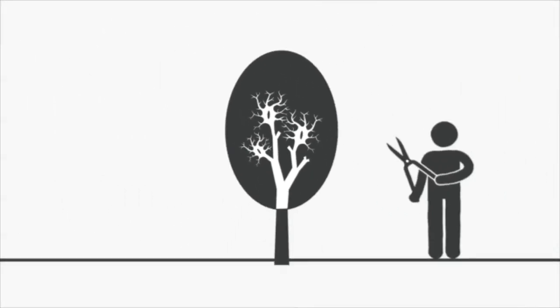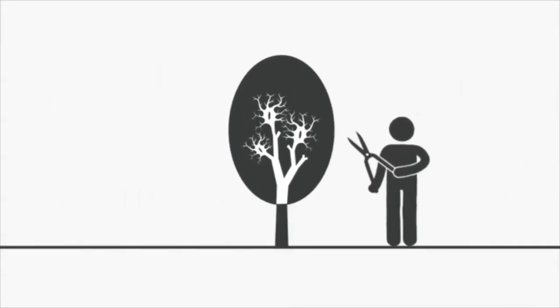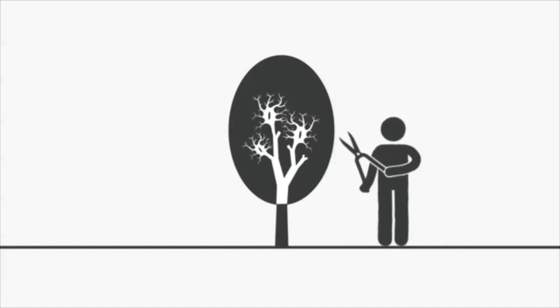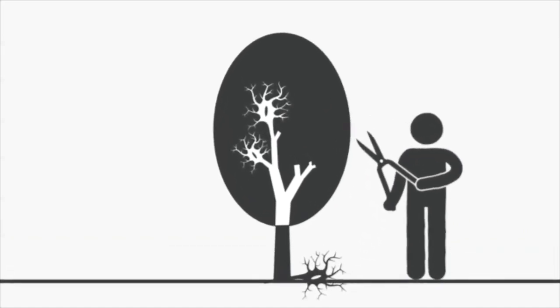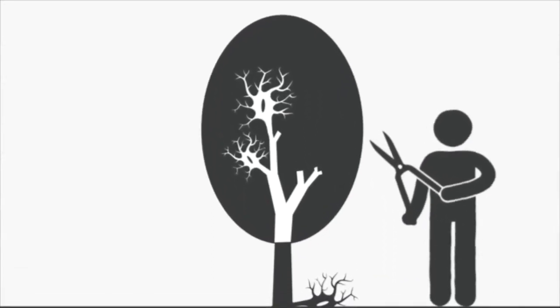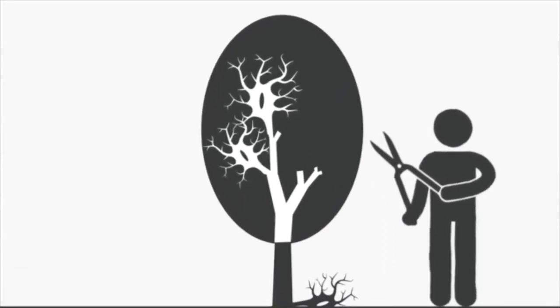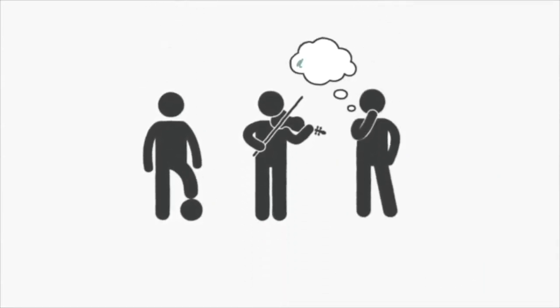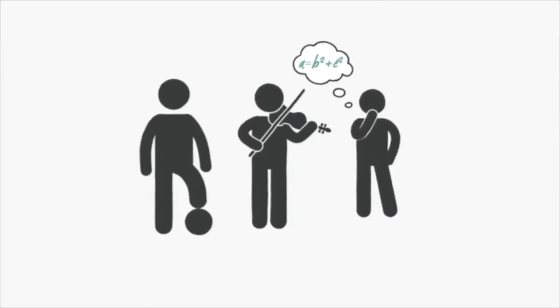As you grow older, your brain becomes more specialized to do the things you do a lot through a process called synaptic pruning. Synapses you aren't using are pruned away so active synapses have room to get stronger and better at what they do. So the more time you spend practicing things like sports, music, or solving math problems, the more these brain networks continue to build and strengthen.